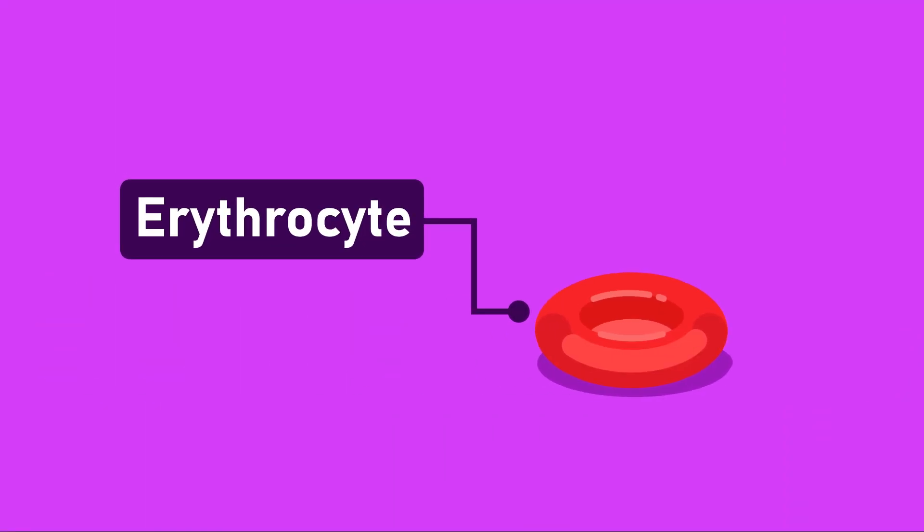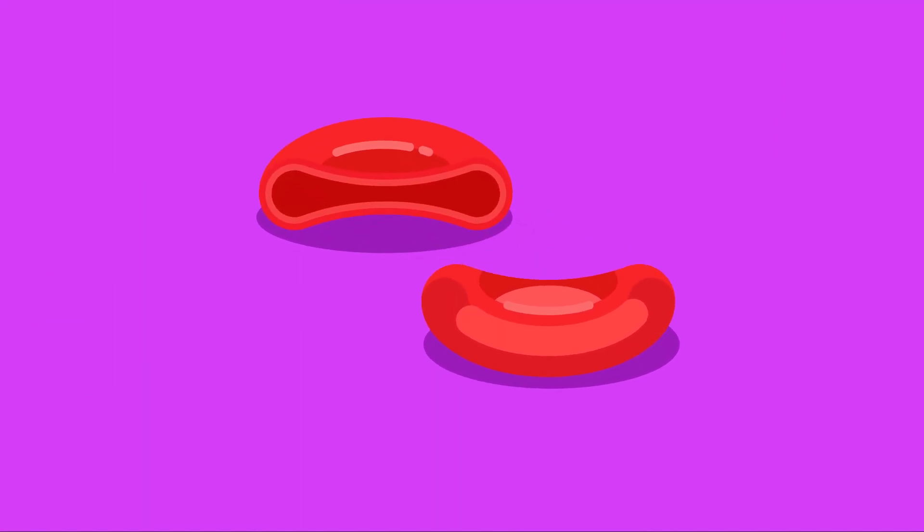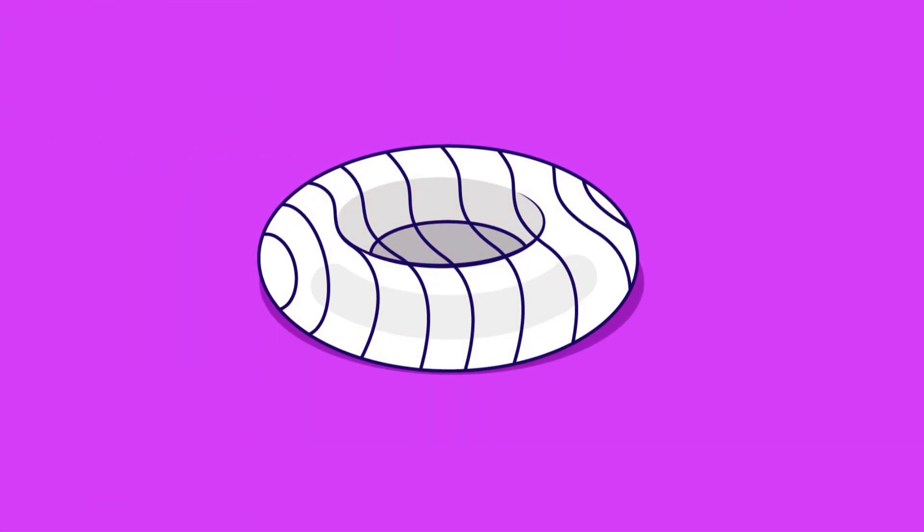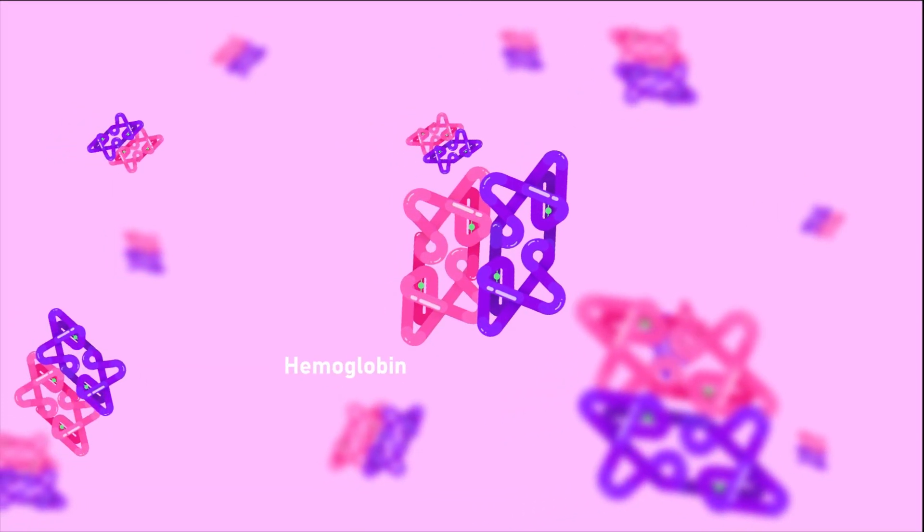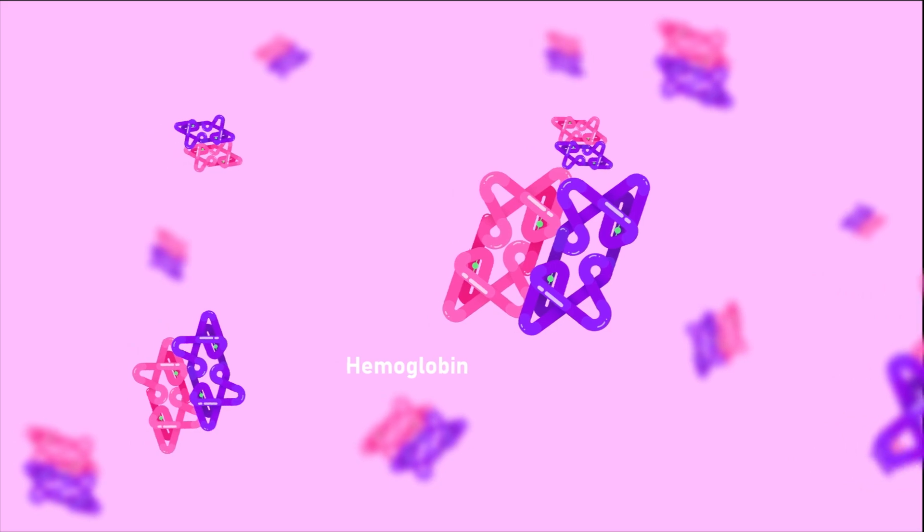The red blood cells, or erythrocytes, are biconcave discs which lack a nucleus and have elastic membranes that allow erythrocytes to squeeze into the tiniest capillaries. The biconcave shape gives the cell its high surface area to volume ratio, improving gas exchange, while lack of a nucleus makes additional space for hemoglobin.